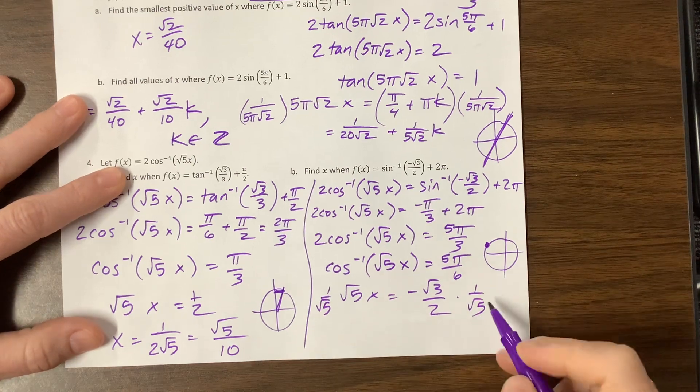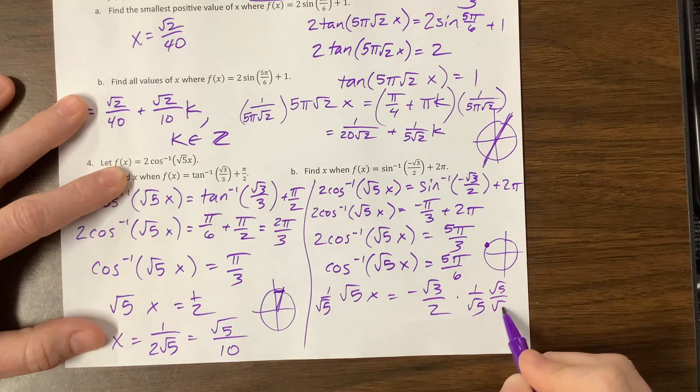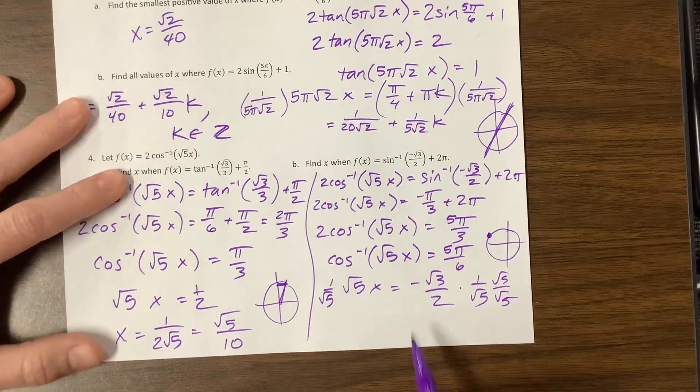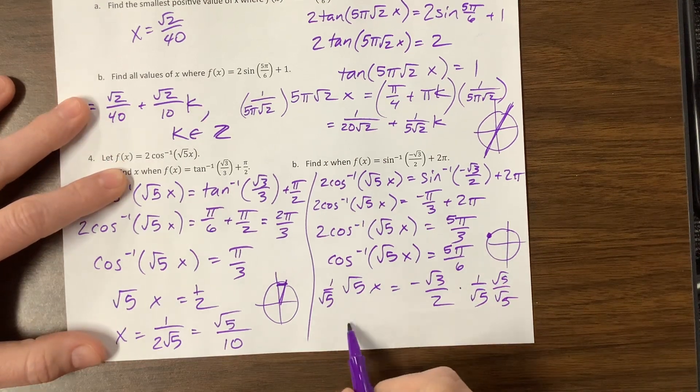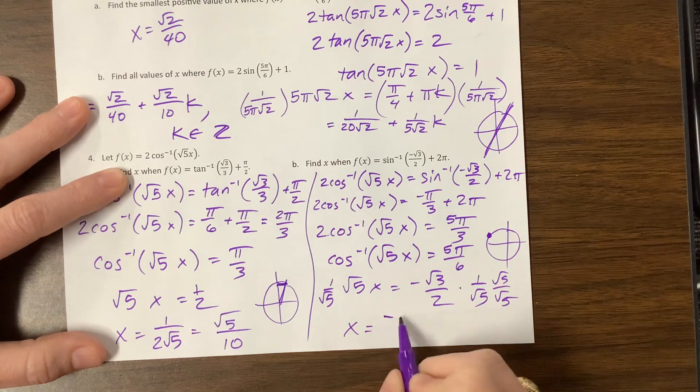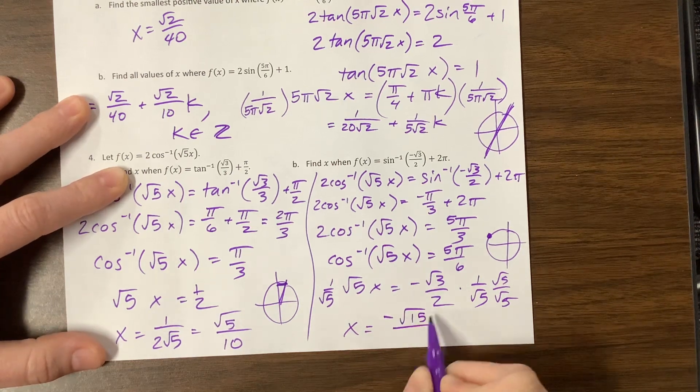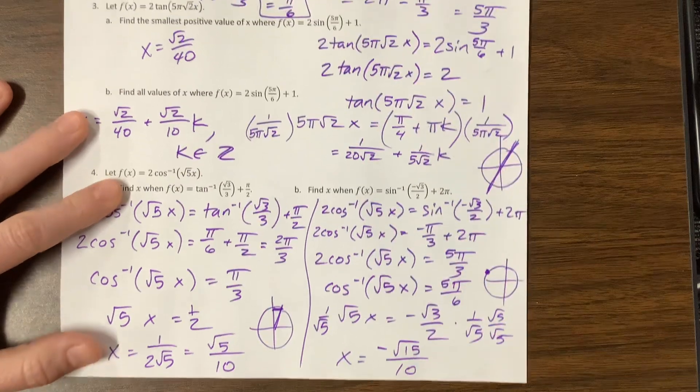And now I need to multiply by 1 over √5. We can also multiply by √5 over √5 so that we can rationalize the denominator. And I get -√15 over 2 times 5 is 10. And there we go.